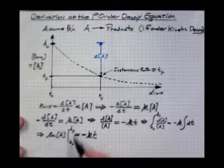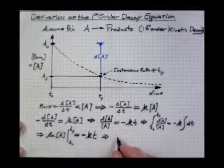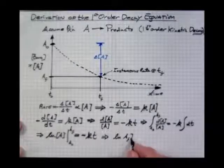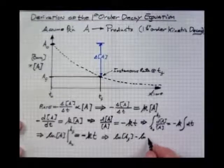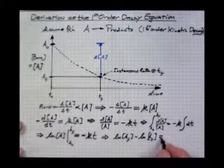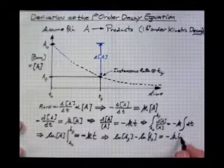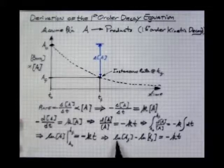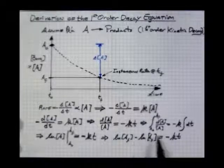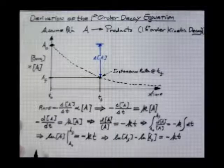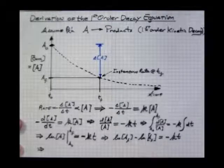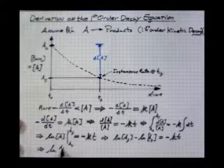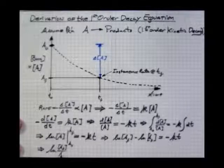So that would be LN of A final minus the natural log of the initial concentration. The expression here can be condensed and expressed as a ratio of A final over A O equals minus KT. So that's LN of A final divided by the initial concentration.